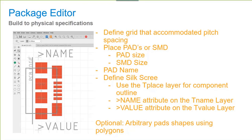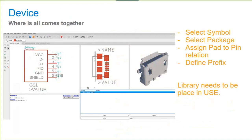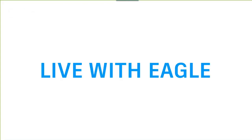At the device level, you select your schematic symbol, select your footprint, and use the connect command to associate each pin of the schematic symbol to one of the pads. It's also possible to assign multiple pads to a single pin — for example, if you have 10 pads that all connect to the same net, you use one pin and assign all 10 pads to that one pin.